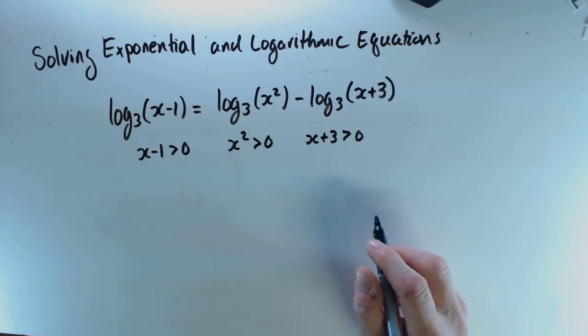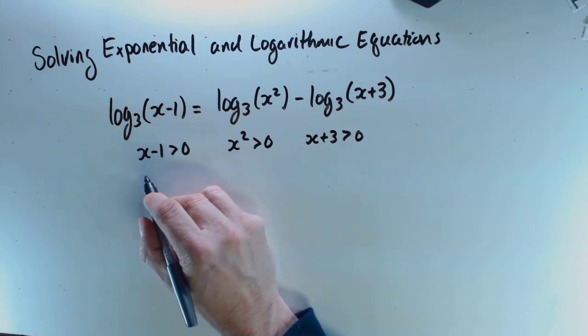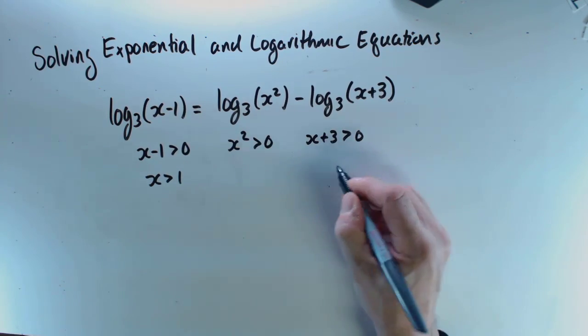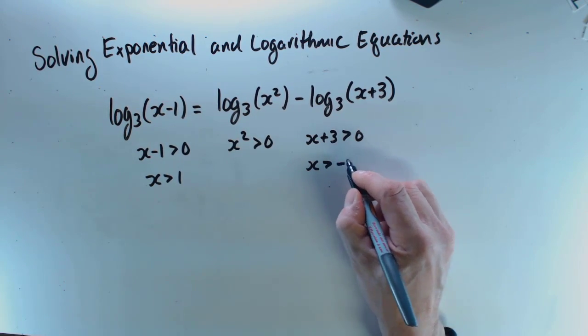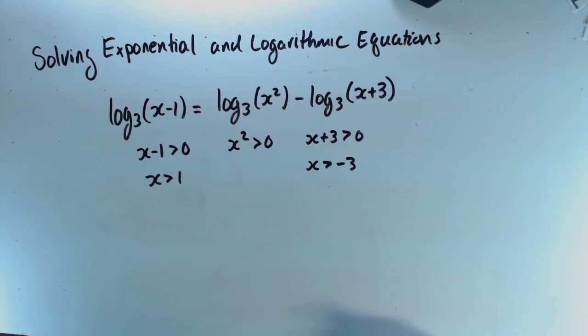And so I can see that x has to be greater than 1. It also has to be greater than negative 3, but if it's greater than 1, then it's already greater than negative 3. Okay,